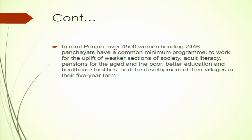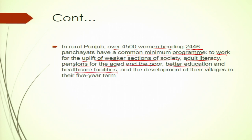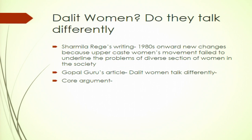For instance, Esther Duflo shows that in rural Punjab, over 4,500 women are heading 2,446 panchayats and have a common minimum program. The main focus or thrust of their common minimum program is the upliftment of economically weaker sections of society, ensuring adult literacy, pensions for the aged and the poor, better education and healthcare facility, and the development of their villages. This leads to another issue we need to understand — regarding Dalit women in the context of the rural sector and gender outcomes in Indian politics.